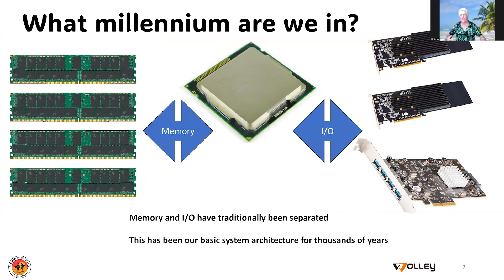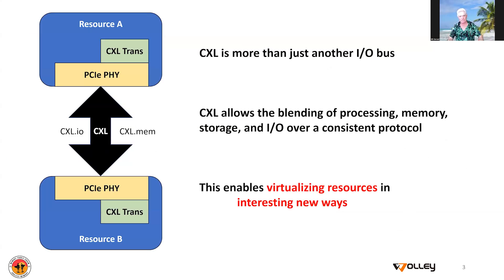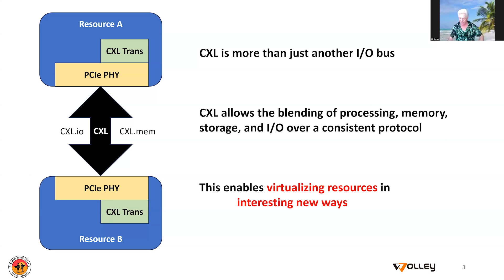I'm going to start with this idea of what millennium are we in. With this picture right here, you see a CPU with memory on a memory channel and I/O on an I/O channel. This is how we built systems literally for decades — there was no way to blur these. CXL is more than just another I/O bus. It does something we have not had: the ability to merge I/O and memory over a common protocol, enabling virtualization of memory and I/O in ways not previously possible.